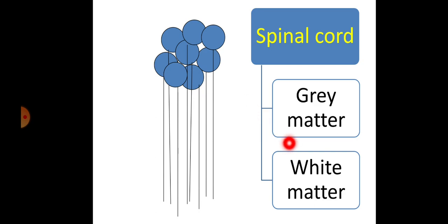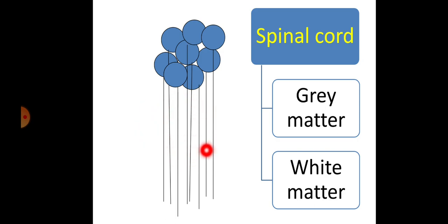What is this grey matter and what is this white matter? Before going to understand this, first you should know the parts of the neuron. The neuron has a cell body and an axon. If the cell bodies are collected in one place, that collection of cell bodies in the CNS is called grey matter. Similarly, the collection of axons, especially myelinated axons, is called white matter.